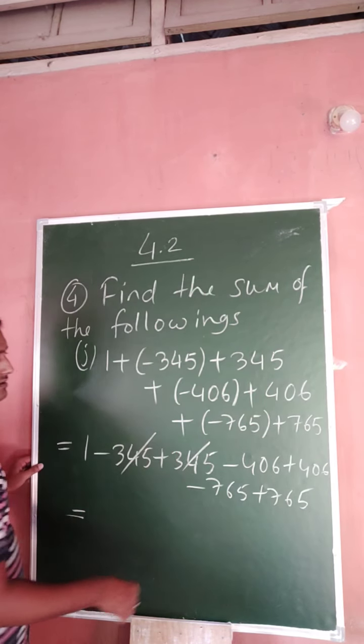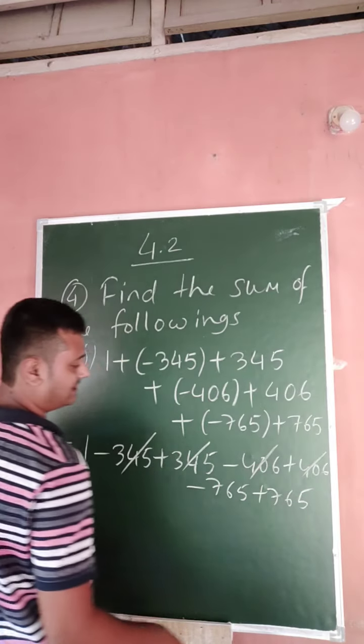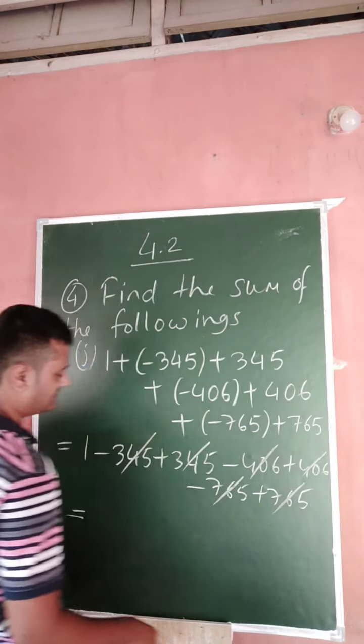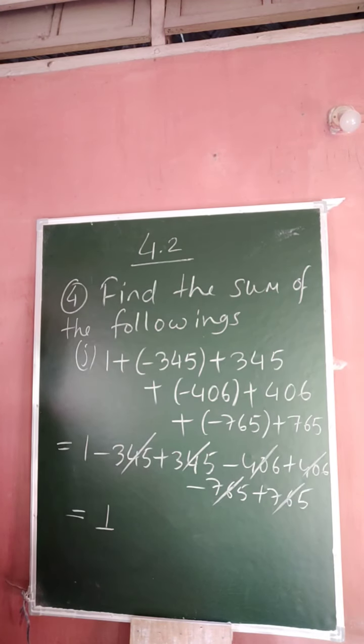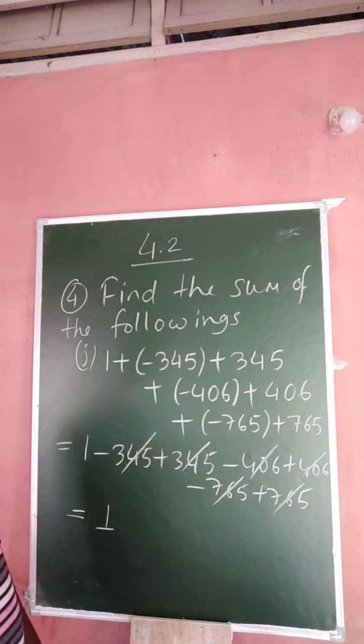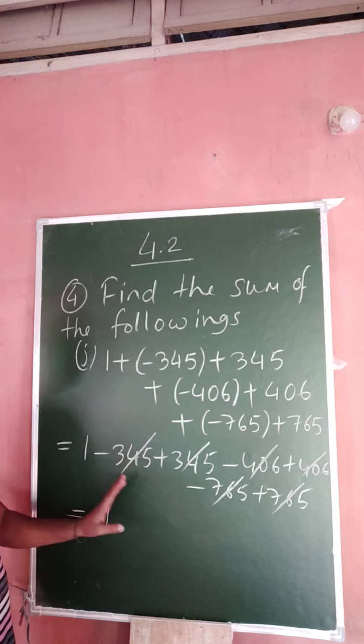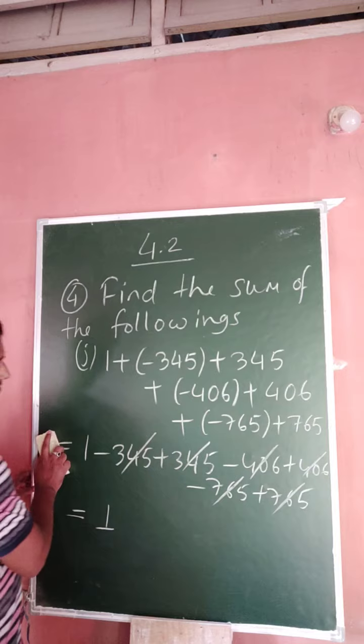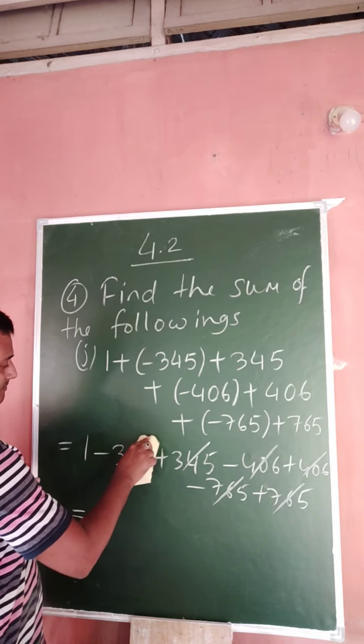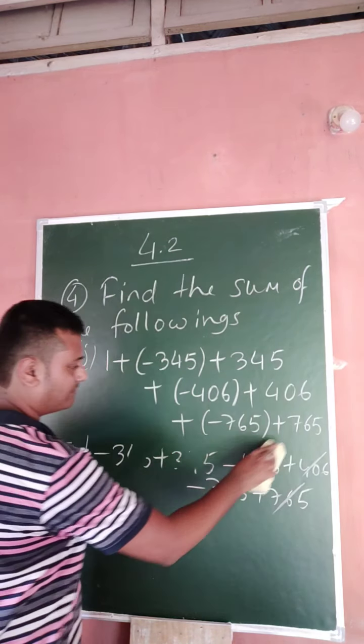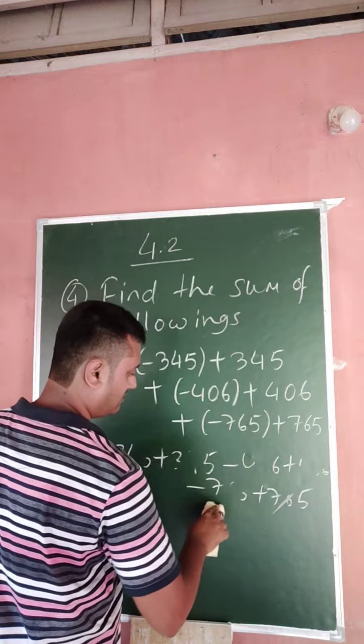Cancel minus 406 plus 406, cancel minus 765 plus 765. So the main term is 1. You can solve in this way. Again, suppose you're not cancelling them.